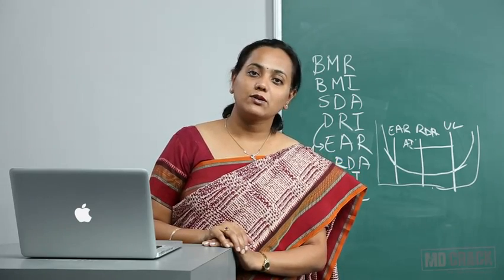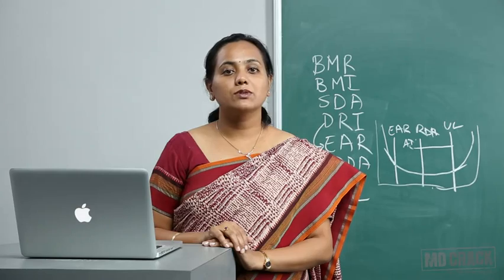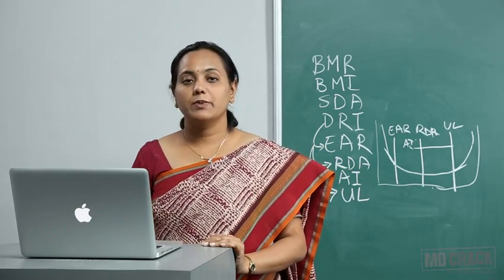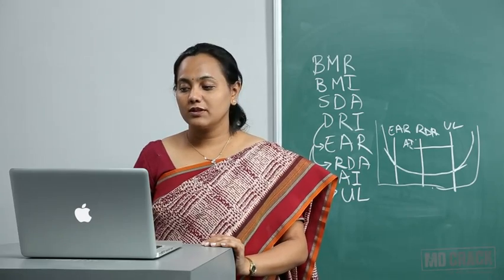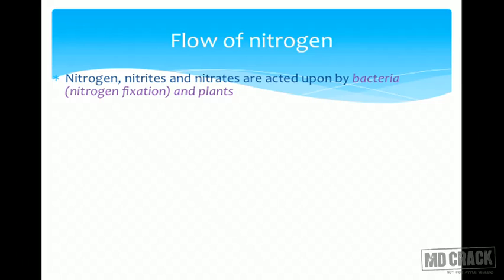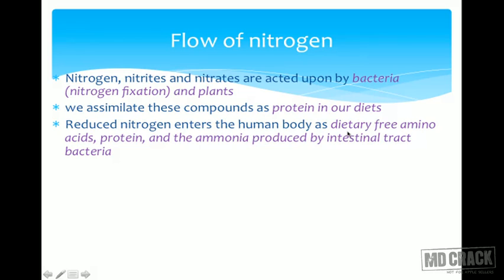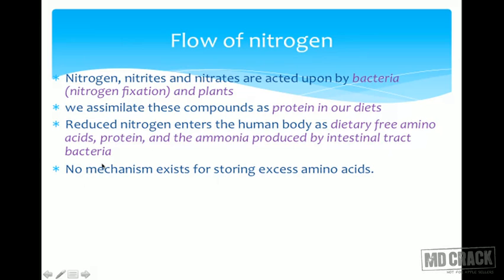Proteins are nitrogen-containing compounds. There is an important term known as nitrogen balance. Nitrogen flows from the atmosphere to our body — nitrates are acted upon by nitrogen-fixation bacteria and plants, and that is how it reaches our body. We assimilate these compounds as proteins in our diet. Reduced nitrogen enters the human body as dietary free amino acids, proteins, and ammonia produced by intestinal tract bacteria.